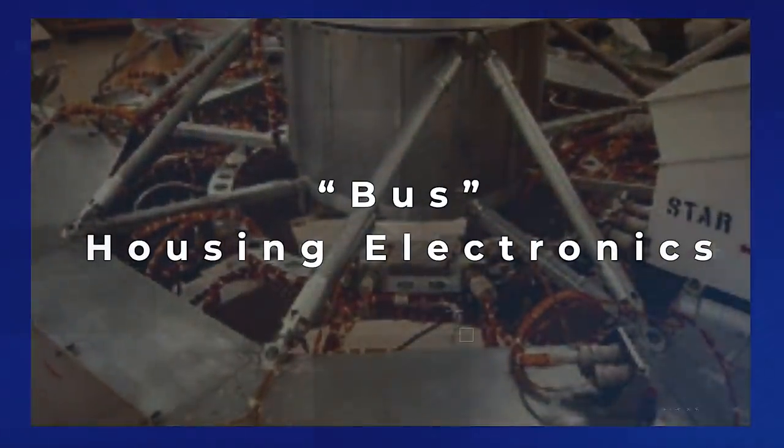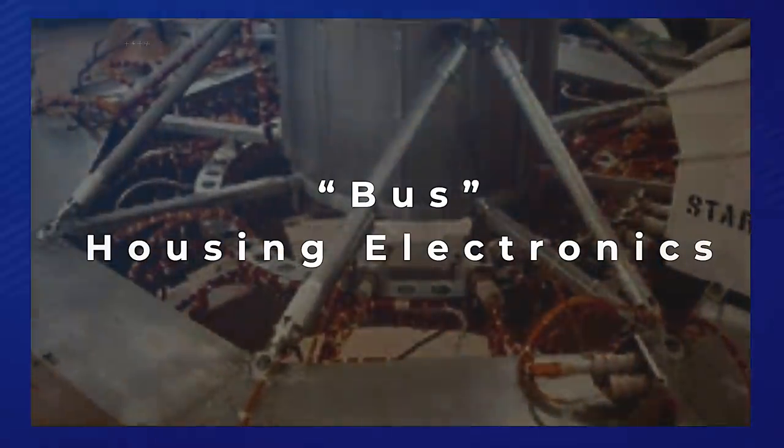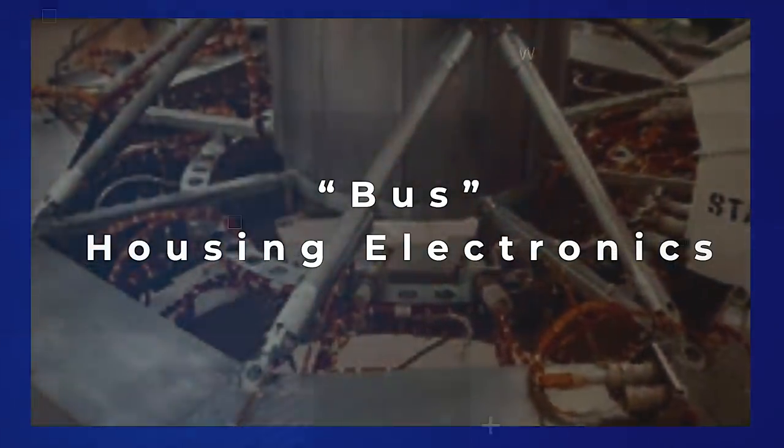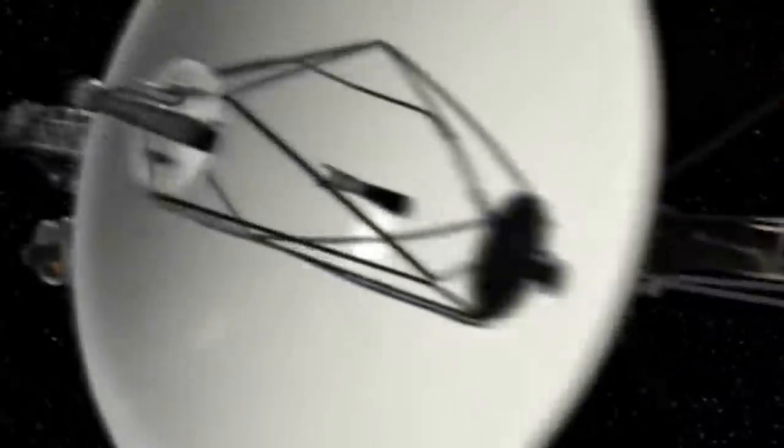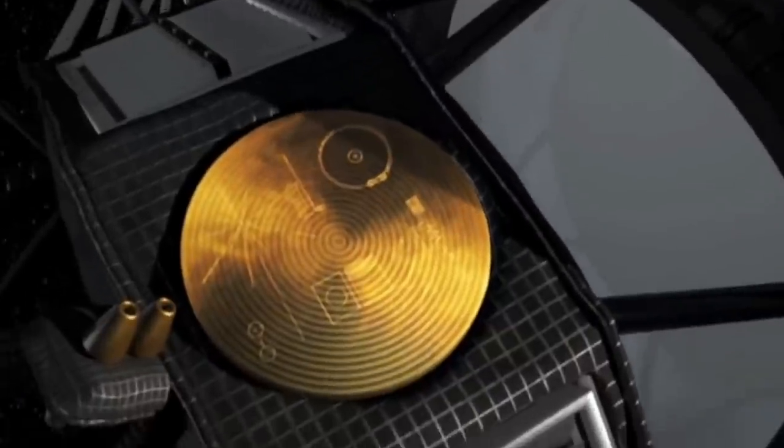Bus housing electronics. The part of the craft that supports the various scientific and engineering systems. Each side of the bus carries various electronic equipment. Bay 1 carries the radio transmitters that allows the Voyagers to send data back to Earth.